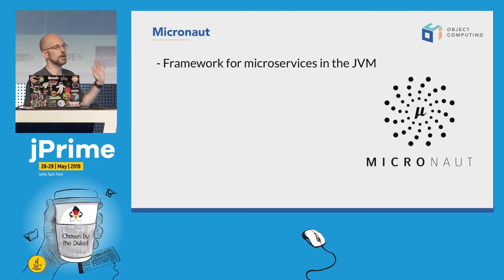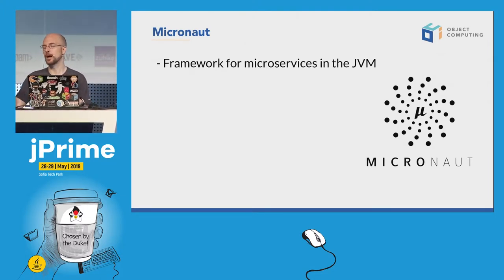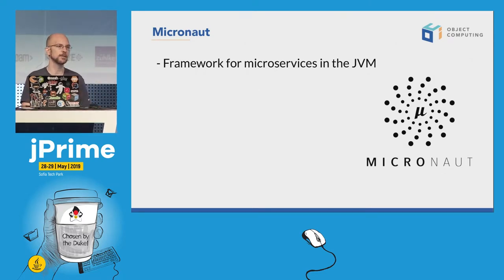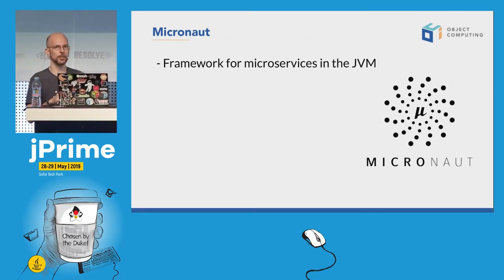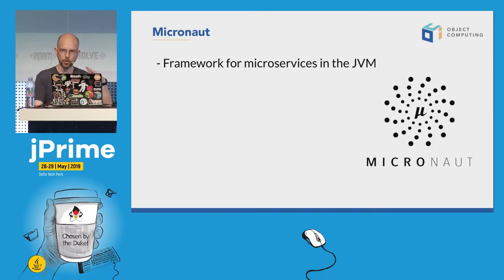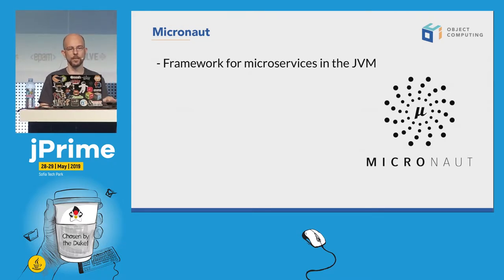Micronaut is a framework for developing microservices on the JVM. It's been created from scratch with all the lessons learned from creating, maintaining, and developing Grails for more than 10 years. If you don't know Grails, it's a full-stack framework built on top of Spring Boot. Grails creator Graham Roche also created Micronaut, with all that experience in mind, focused only on microservices.